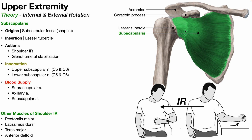If you have a patient prone to subluxation, dislocation, or general instability, you want to target the rotator cuff muscles for strengthening. The other major action of the subscapularis is shoulder internal rotation — it is the only rotator cuff muscle that facilitates this movement. The subscapularis is innervated by two nerves from the brachial plexus: the upper and lower subscapular nerves, both receiving nerve root contributions from C5 and C6.